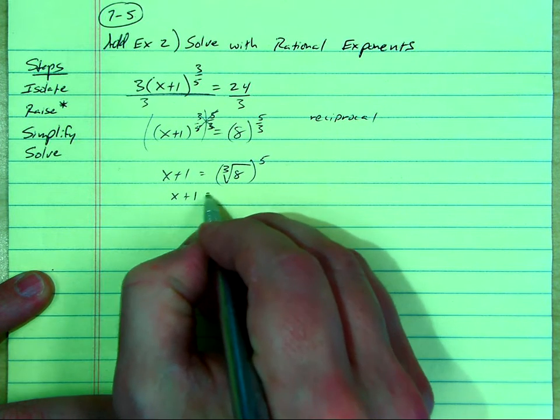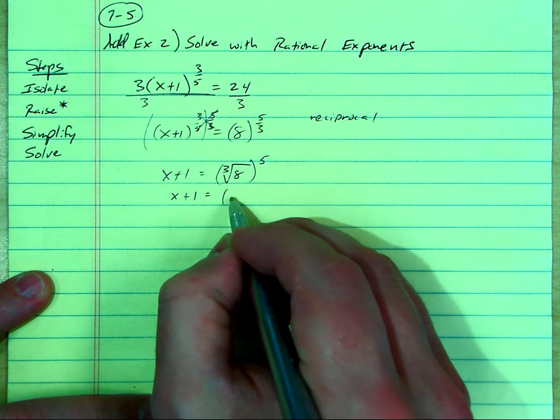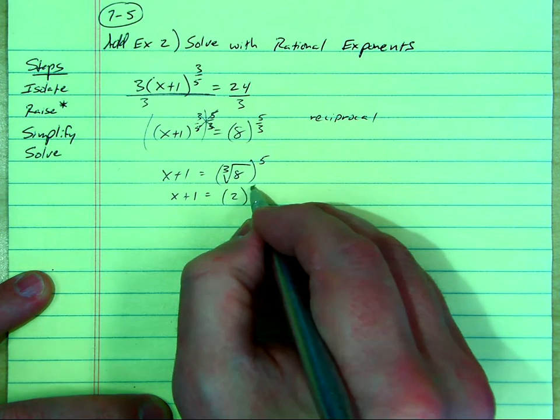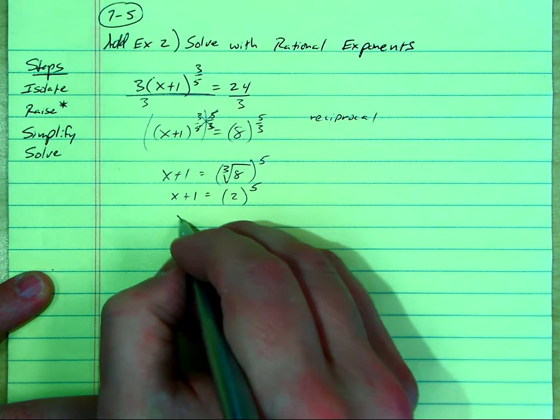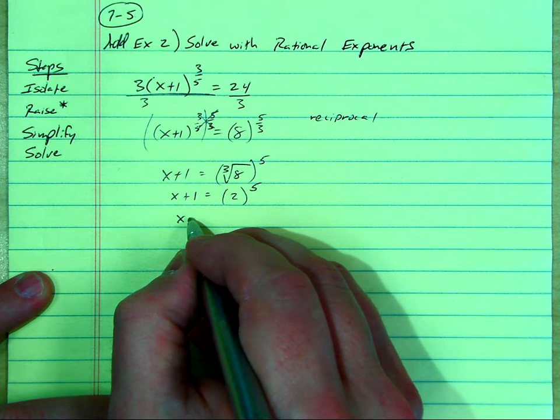So we have x plus 1 equals, what is the cube root of 8? It is 2, and we take that up to the 5th power. So that's going to be 2 to the 5th power. I happen to know that's 32.